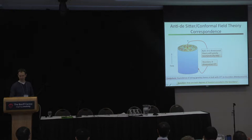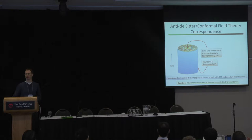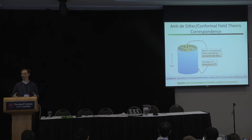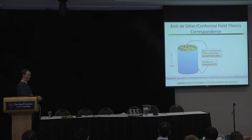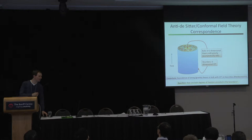One of the two theories is a theory of quantum gravity in a particular kind of spacetime — anti-de Sitter space — in d+1 dimensions. For our purposes, think of anti-de Sitter space as a spacetime in a box. If you're in anti-de Sitter space with a laser pointer and you shine it off in some direction, it goes out to some boundary, bounces back, and hits you again in some finite time.